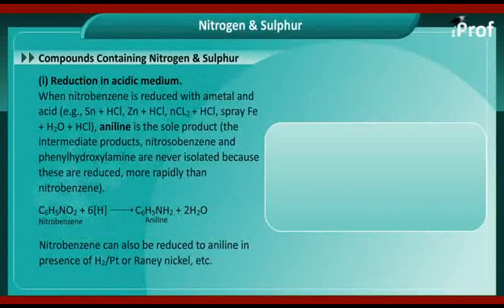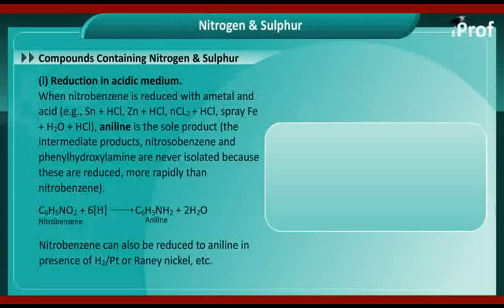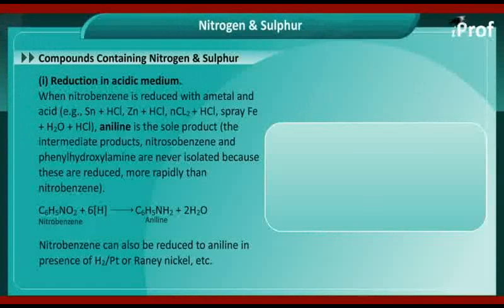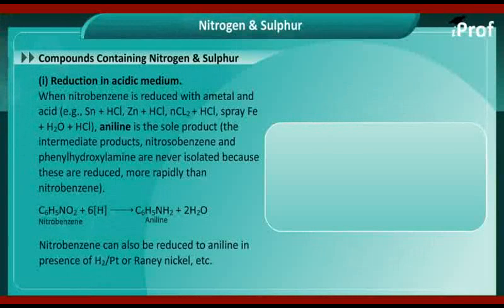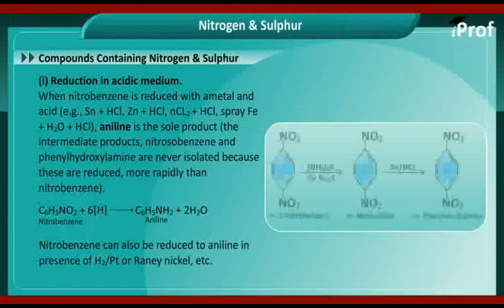Reduction in acidic medium: Nitrobenzene is reduced with a metal and acid, such as tin and HCl, zinc and HCl, or iron and water with HCl. The amine is the sole product. The intermediate products nitrosobenzene and phenylhydroxylamine are never isolated because these are reduced more rapidly than nitrobenzene. The reaction is: C6H5NO2 + 6H, in the presence of the suitable reducing agents, gives C6H5NH2 (aniline) + 2H2O.